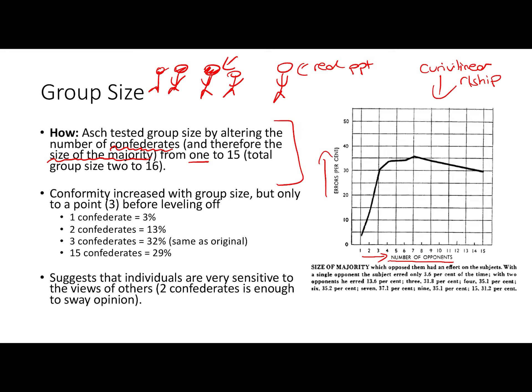This levelling off is a really interesting finding. When there was just one confederate giving the wrong answer, conformity was at 3%. With two confederates it was 13%, and with three confederates it rose to 32% — the same rate as Asch's baseline experiment. But when there were fifteen confederates, conformity actually decreased slightly.